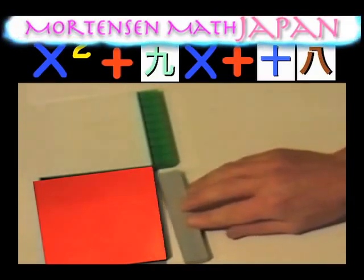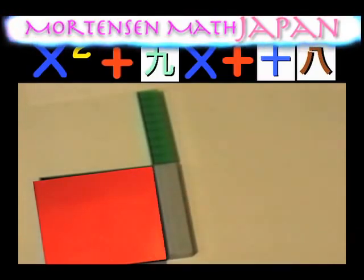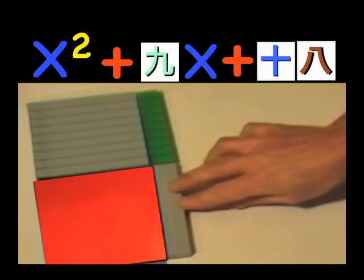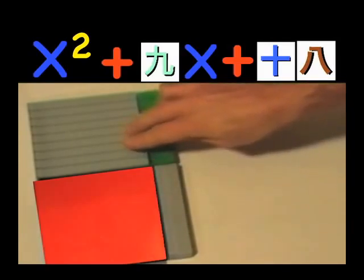It is now obvious how many x's we must place on the side. We must place 2x's on the side, and we must place 9x's above. However, does 2 and 9 equal 9? No.